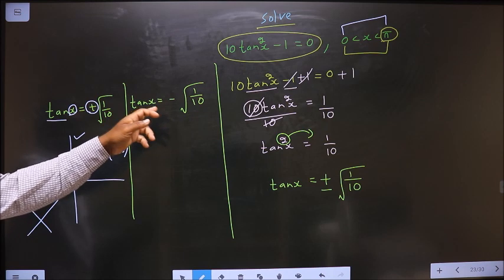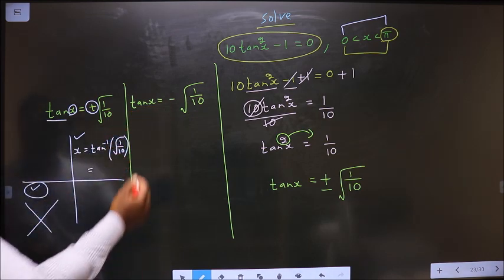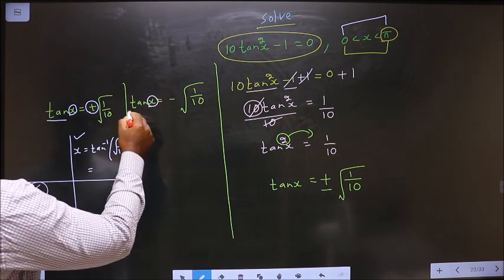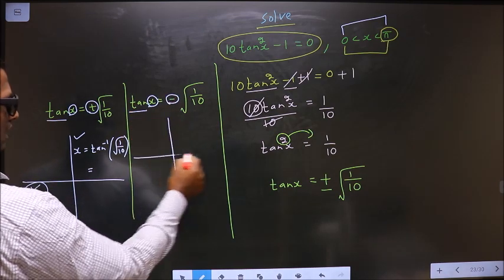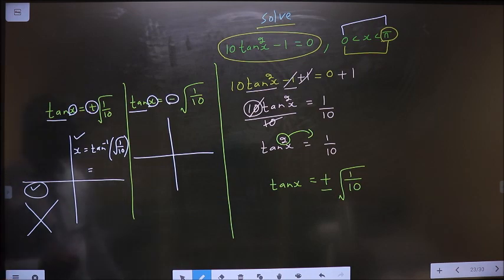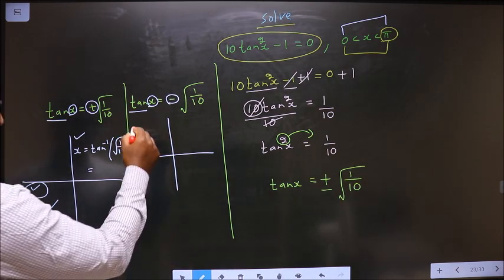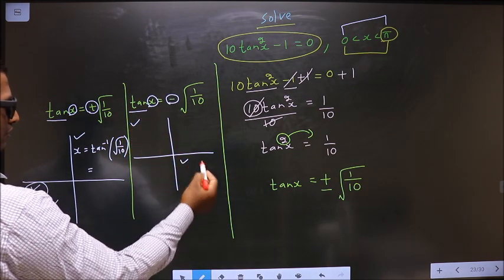Now coming to this equation. To get the values for x, here it is tan and here it is negative. So now in what all quadrants is tan negative? It is negative in the second and in the fourth.